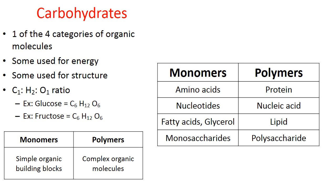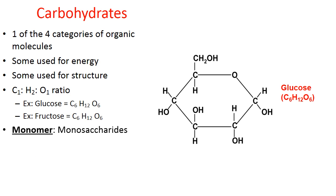Here are the categories of monomers and polymers. This video is only going to touch on the monomers called monosaccharides and the polymers called polysaccharides. Monosaccharides are the monomers of carbohydrates — they're the building blocks. Glucose is a great example of a monosaccharide. It's a simple sugar. The word saccharide is Greek for sugar, so sugars are carbohydrates.